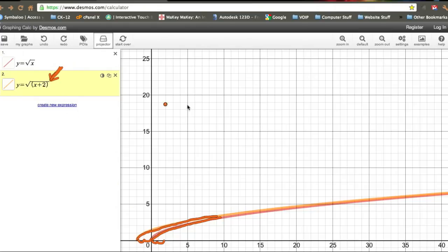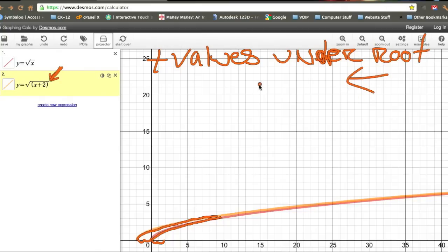and the new one in the orange has now moved two places to the left. So adding values underneath the root, positive values under the root, move it to the left. And negative values move it to the right.